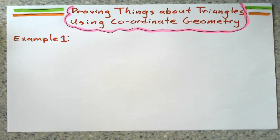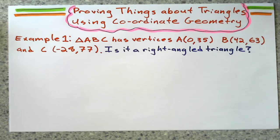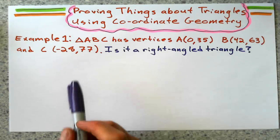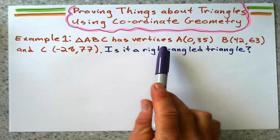What kind of things are we going to prove here, Mr. Riccardi? Alright, so example one, we've got triangle ABC has vertices, corners, points,